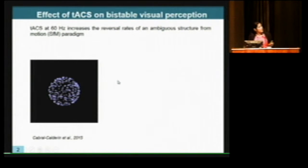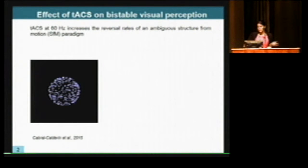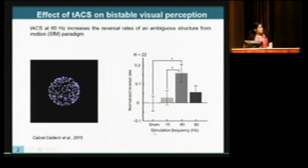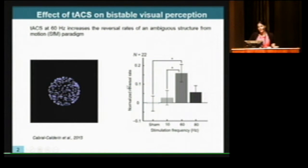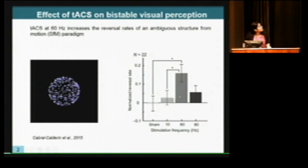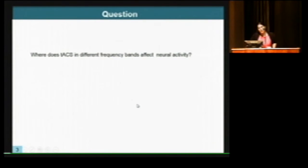In a previous study, we found that TACS at gamma frequency is able to modulate bistable perception. We showed participants an ambiguous sphere that could be perceived as rotating to the right or to the left, with perception switching between dominant percepts spontaneously over time. We tested different frequencies — 10, 60, and 80 Hz — and found that applying TACS at 60 Hz caused an increase in the reversal rates of this ambiguous stimulus.